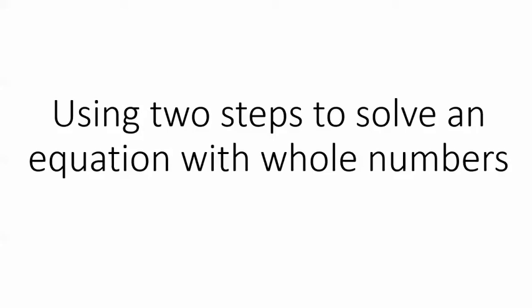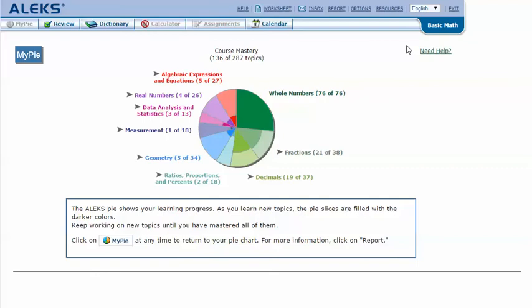Using two steps to solve an equation with whole numbers. In your ALEKS Pie, mouse over the dark green slice 'whole numbers' to reveal the drop-down list of topics you need to cover. Click on 'Using two steps to solve an equation with whole numbers.'